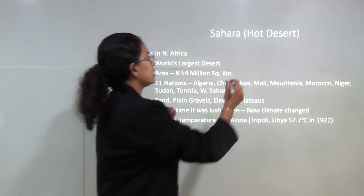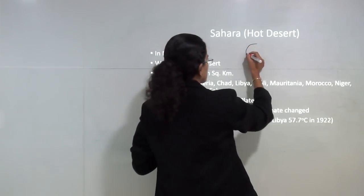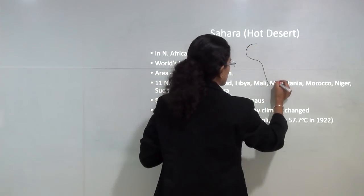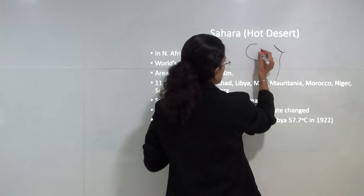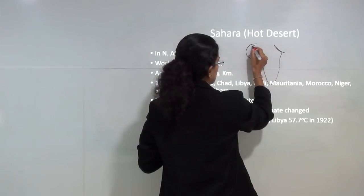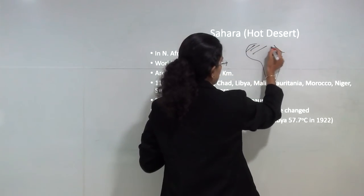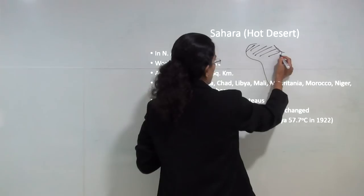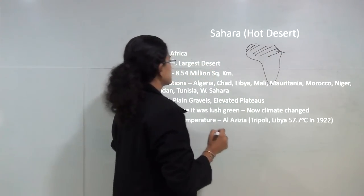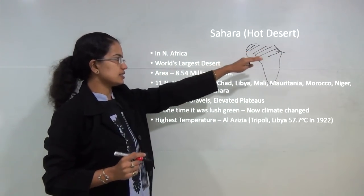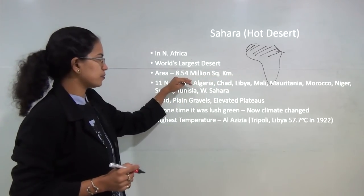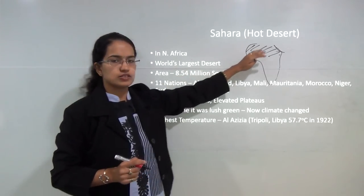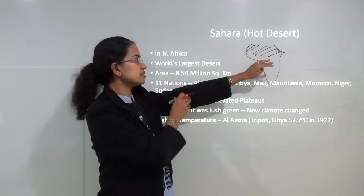If we look on the map of Africa, the northern region is the Sahara desert. This is the world's largest desert area, with an area of 8.54 million square kilometers.